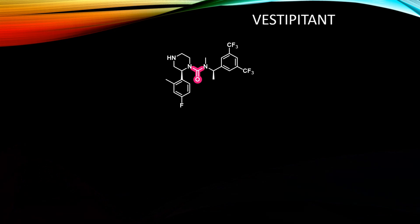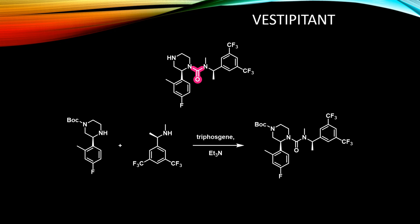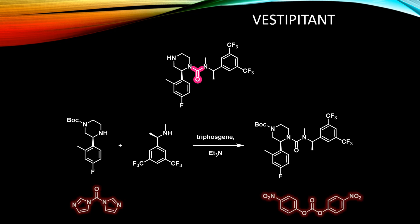Triphosgene was also employed in the original synthesis of esterpittant, a compound developed by GSK which is being investigated for relieving the nausea and vomiting caused by chemotherapy. When screening for reagents, including other phosgene substitutes like CDI and bis-paranitrophenyl carbonate, triphosgene proved to be the only effective option, giving better yields than phosgene itself.